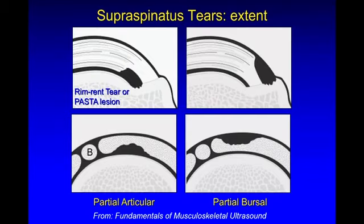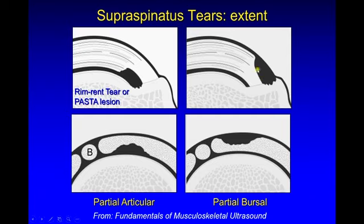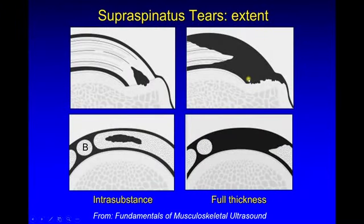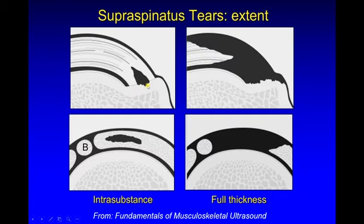When you identify an abnormality, we need to understand which surface of the tendon it connects to. If it only touches the articular surface and does not extend to the bursal surface, this is a partial articular-sided tear, also called a rim-rent tear or a PASTA lesion. If the abnormality involves the bursal surface but doesn't connect to the articular surface, this is a partial thickness bursal-sided tear. In both examples, the abnormality does touch the greater tuberosity surface, but because it does not connect the articular to bursal surface, we have excluded a full thickness tear. An abnormality buried inside the tendon is called an intrasubstance or interstitial tear, which would not be seen at arthroscopy or bursoscopy.